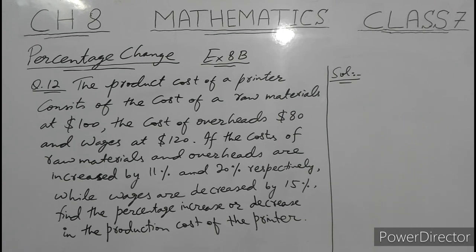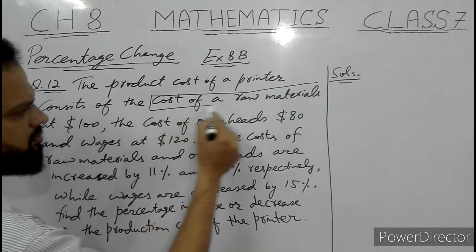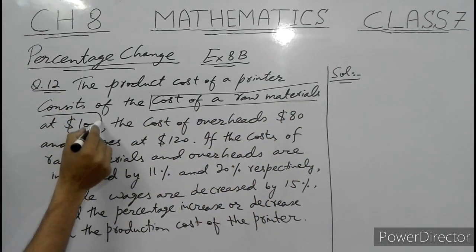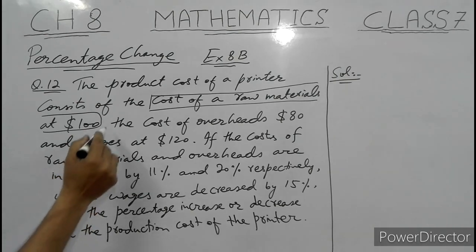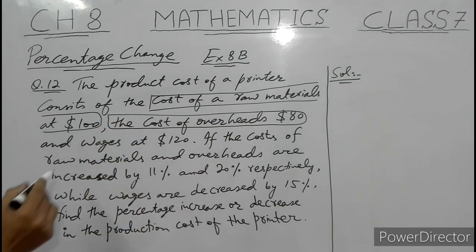Assalamu Alaikum dear students. Today's topic is percentage change and I am doing question number 12 of exercise 8b. The production cost of a printer consists of cost of raw materials at $100, cost of overheads at $80, and wages at $120.